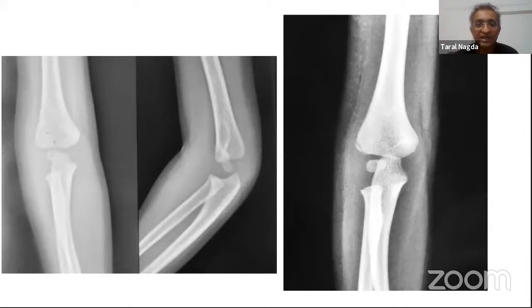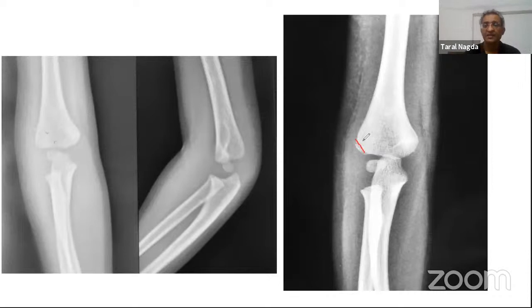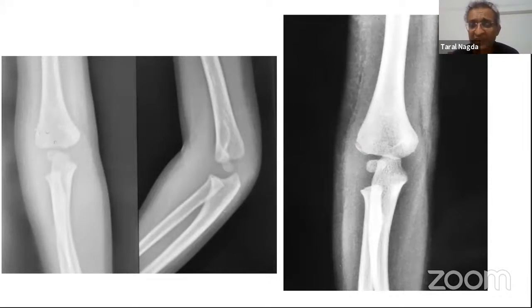The first case is an eight-year-old child with a lateral condyle fracture. Your investigations are not complete until you have the internal rotation view. This is the fracture — it starts and stops short. The fracture gap is less than one millimeter. There were many views from delegates: some suggested observation in plaster, but the majority felt that closed reduction and pinning should be done.